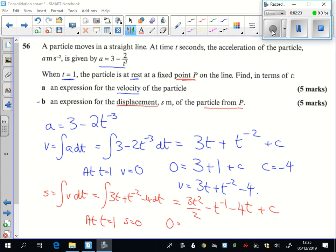So s equals 3 over 2, take away 1, take away 4. And so this time c is equal to 3.5.